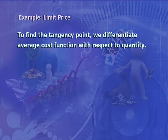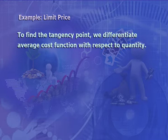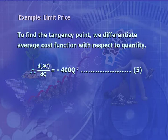The incumbent knows that the potential entrant will not enter unless it earns a positive profit, i.e., π_e > 0. So the incumbent will choose Q_i to make the entrant's profit equal to 0. This will happen if the residual demand curve of the potential entrant just touches — is tangent to — its average cost curve but does not rise above it anywhere. To find the tangency point, we differentiate the average cost function with respect to quantity. Differentiating AC with respect to Q gives −400Q^(−2) (equation 5).